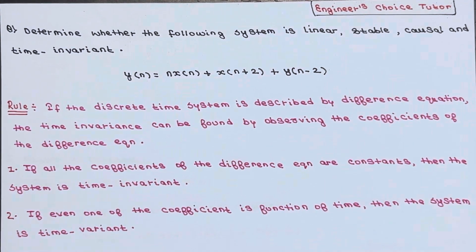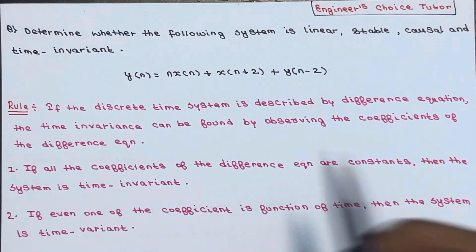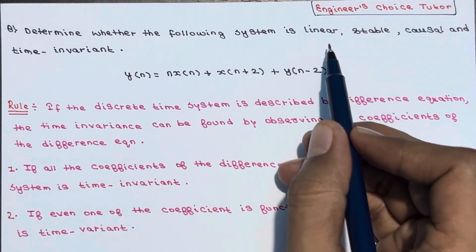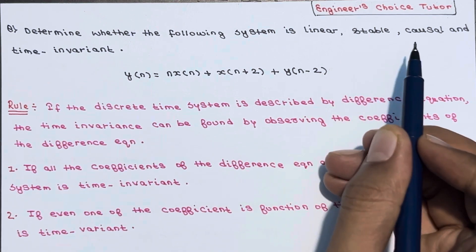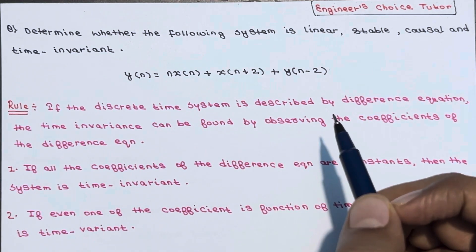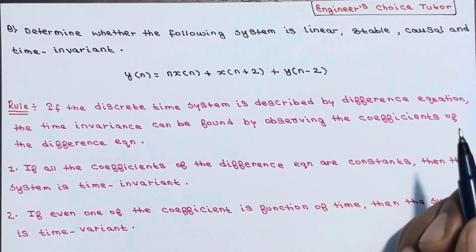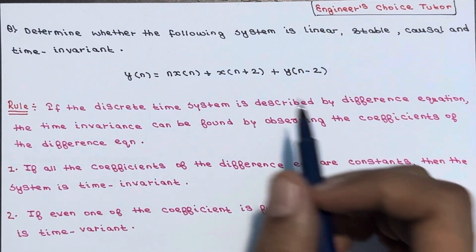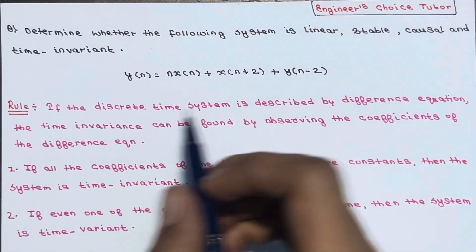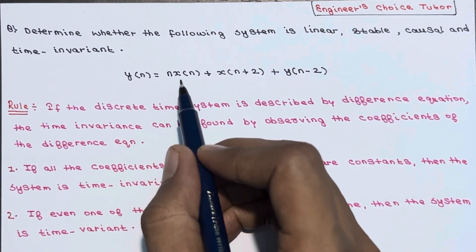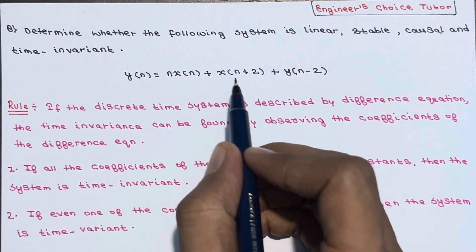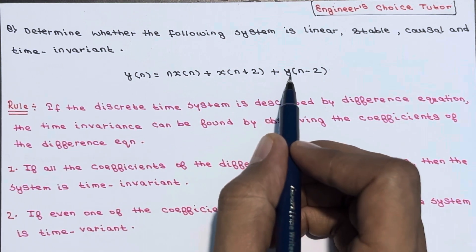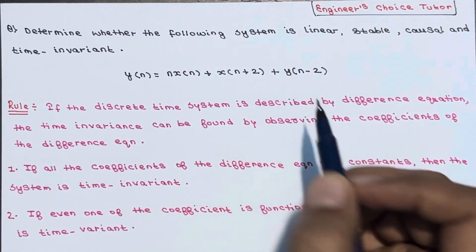Hi everyone. In this lecture we will discuss one more numerical where we have to determine whether the following system is linear, stable, causal, and time invariant or not. The difference equation is given as y(n) = n·x(n) + x(n+2) + y(n−2).